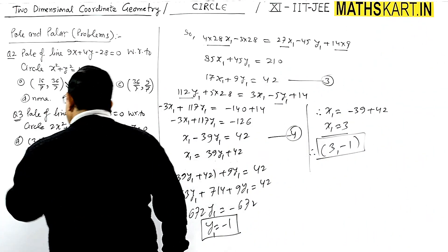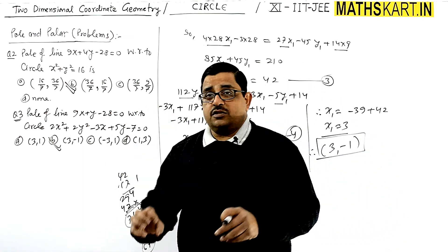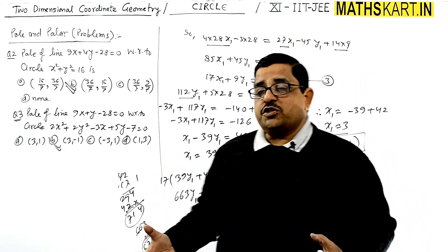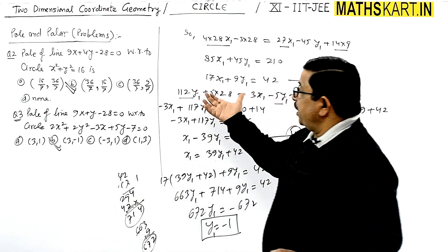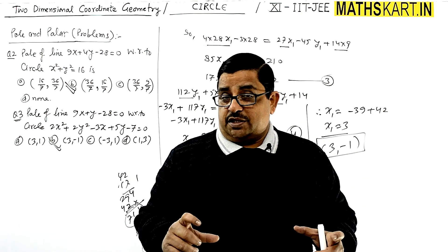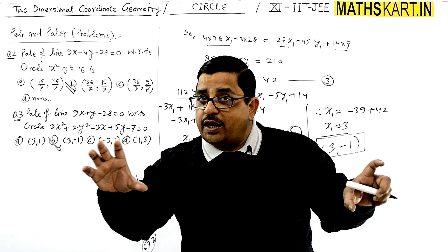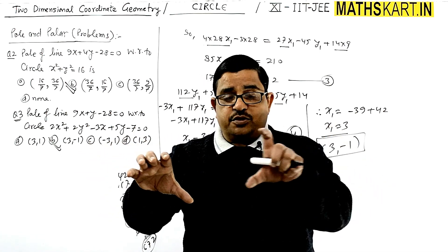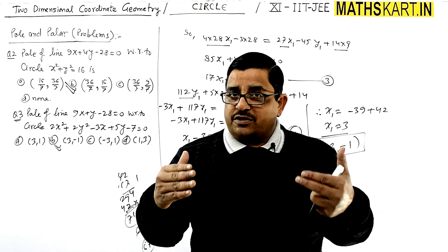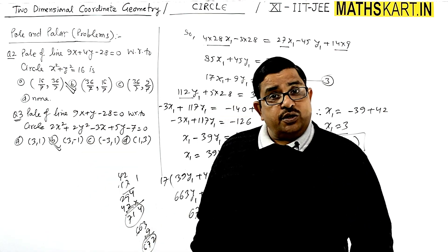So the pole is (3, −1). This was a long question with a lot of calculation, but the key idea is: you get two equations in terms of x₁ and y₁ and then solve them. By comparing three ratios — first to third and second to third — you get the two equations, solve them, and find the pole.